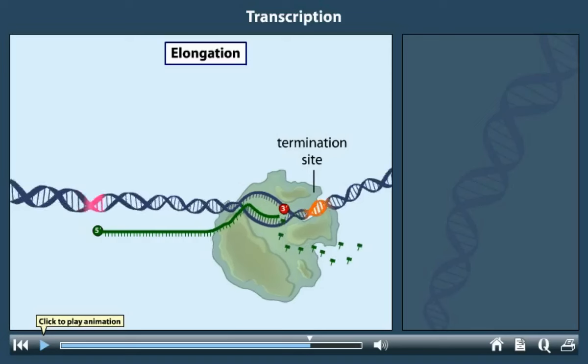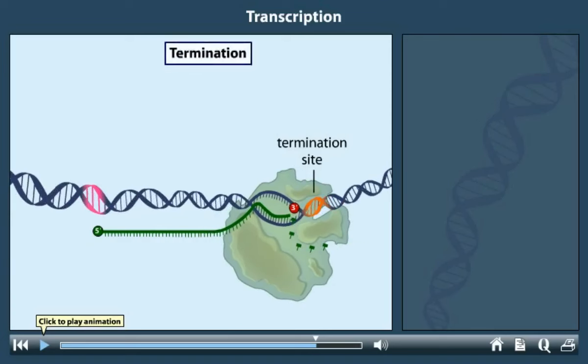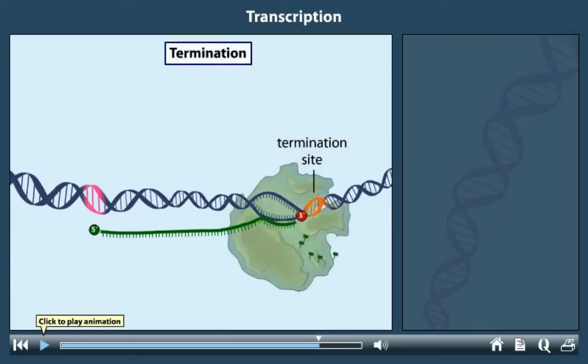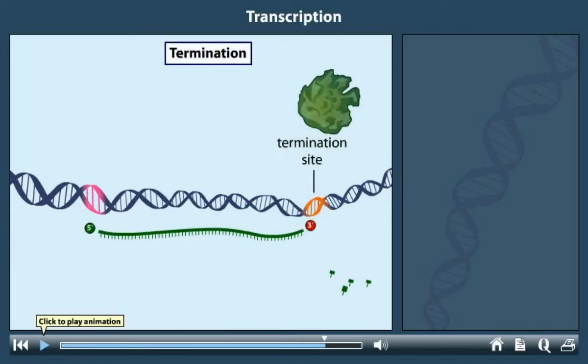When RNA polymerase reaches the termination site, the RNA transcript is released from the template. The DNA rewinds completely and the RNA polymerase dissociates from it. The DNA and RNA polymerase can then participate in other rounds of transcription.